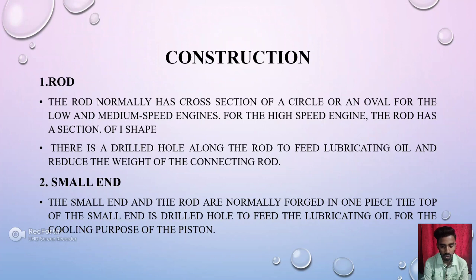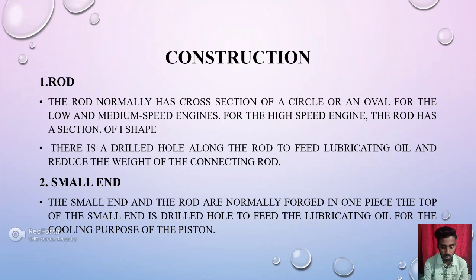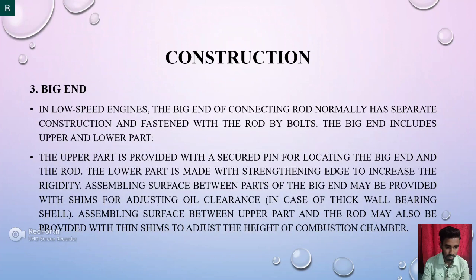There is a drilled hole along the rod to feed lubricating oil and reduce the weight of the connecting rod. Second is the small end. The small end and the rod are normally forged in one piece. The top of the small end is drilled to feed lubricating oil for the cooling of the piston.